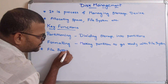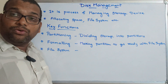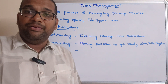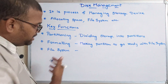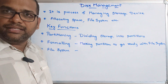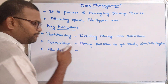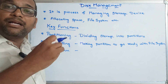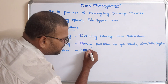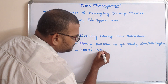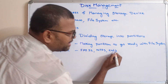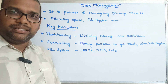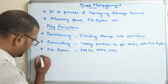The next function is the file system. Every operating system has different file systems to manage files. During formatting, the partition is formatted with a particular file system. We have seen different file systems like FAT32, NTFS, ext3, etc. Every partition gets ready with a file system based on requirements.